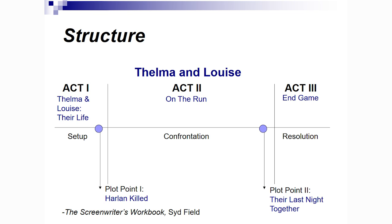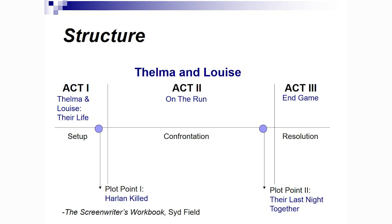It's your basic three-act structure. The first is the setup for your plot point one. Typically, you want to have your first plot point that moves your action forward in the first 10 pages of your script. In this case, they've got plot point one — Harlan is killed — and that moves them into act two, where they're on the run and they have confrontation. Then we've got plot point two, their last night together, and the resolution.